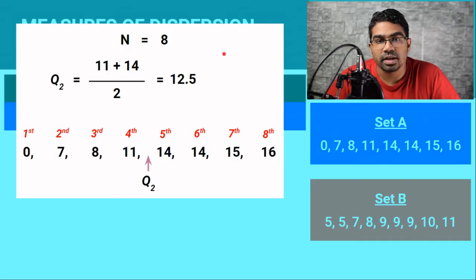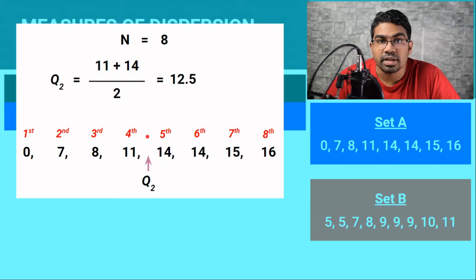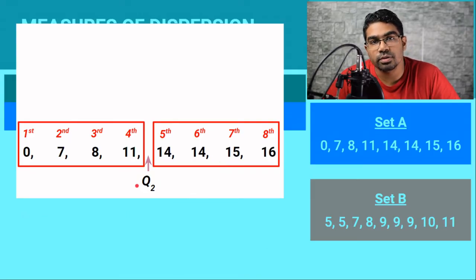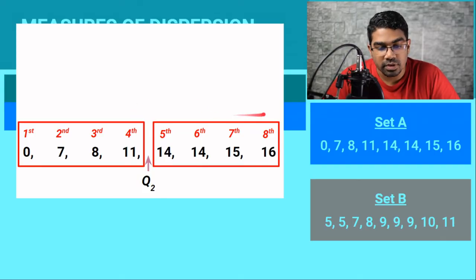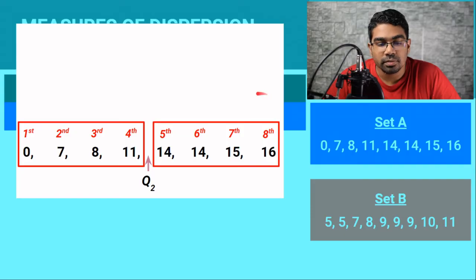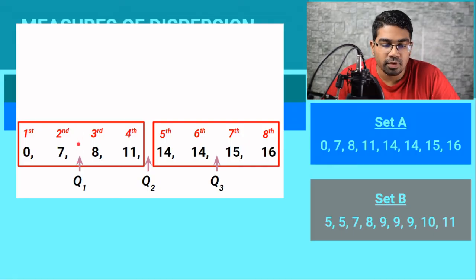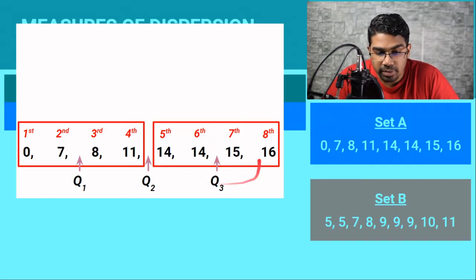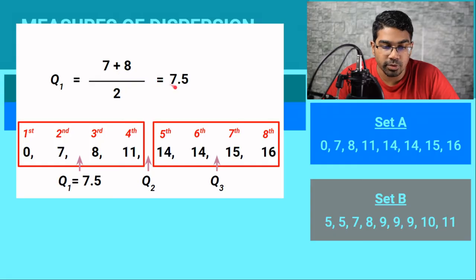We don't actually need the value of the median to find the first and third quartile — we only need to know its position. Once we know the position of the median or second quartile, we can divide the data into exactly two parts. The first quartile is the middle value for the first half of the data, and the third quartile is the middle value for the second half. For example, the first quartile will be the average of the second and third value, which is 7 and 8 divided by 2, which is 7.5.